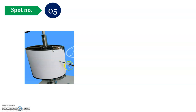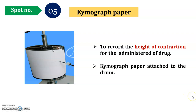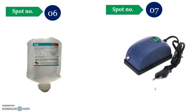Our next spot is spot number five. Here is the white kymograph paper showing that the lever is attached to that spot. It is known as the kymograph paper, used to record the height of contraction. The camera lever is attached to this white paper, which is attached to the drum. This is very important for you.